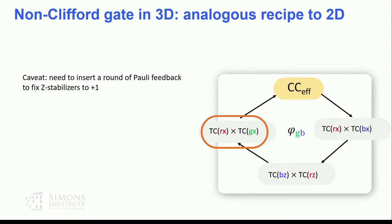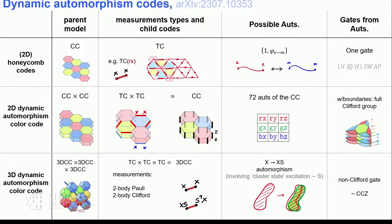Similarly to the 3D case, we can start with a three-dimensional color code, go through a trivial automorphism, then conjugate one step with the non-Clifford gate we want to obtain, getting a Clifford measurement instead. One caveat is that before doing so, we need to insert a round of error correction — correcting all X-type errors and fixing stabilizer values to plus one. This is something you would routinely do for non-Clifford gates in these codes anyway, but it does embed the code in a dynamic frame requiring feedback during computation.